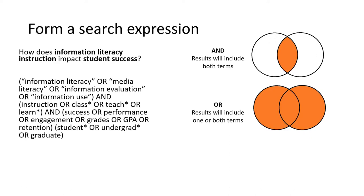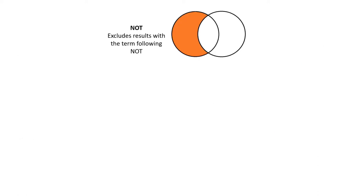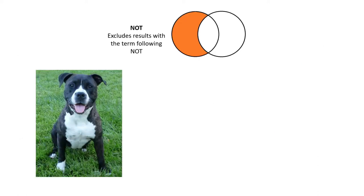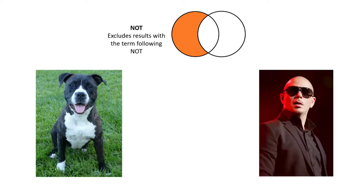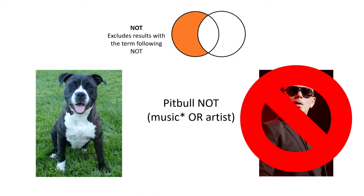The ANDs and ORs I've been using are part of the computer language I mentioned. These operators tell the databases to retrieve either more or less information depending on which you use. There's also an operator to help with words that have alternate meanings. Say I'm doing research on a dog breed and I type the keyword pitbull into my search — I also find I'm getting a lot of results with the musician. I can use the operator NOT to exclude results that refer to the musician and help make my results as relevant as possible.